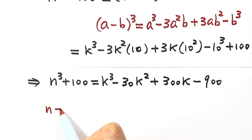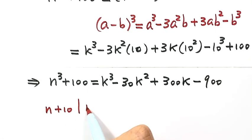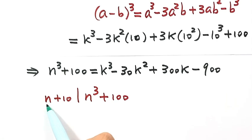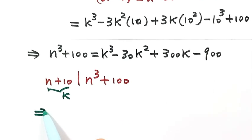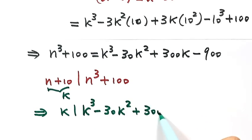Because at the beginning we set n plus 10 to k, then we have k divides k to the third minus 30k squared plus 300k minus 900.